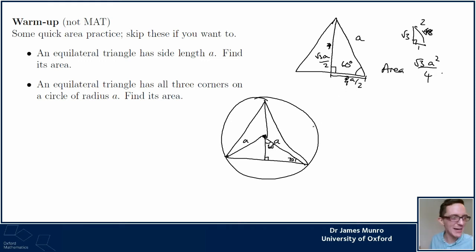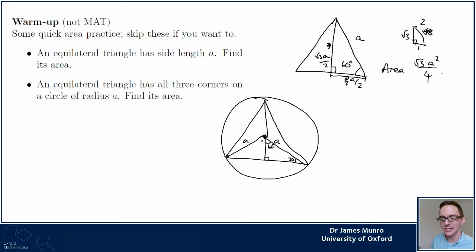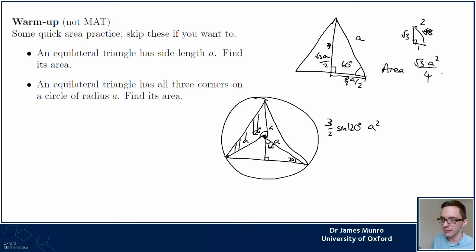Can we do this one really quickly? Someone in chat has told me to use the 120-degree angle here: half × sin(120°) × a², and then there are three of these little triangles. If I was really great at geometry I would have thought of that straight away - I just really like right-angle triangles.